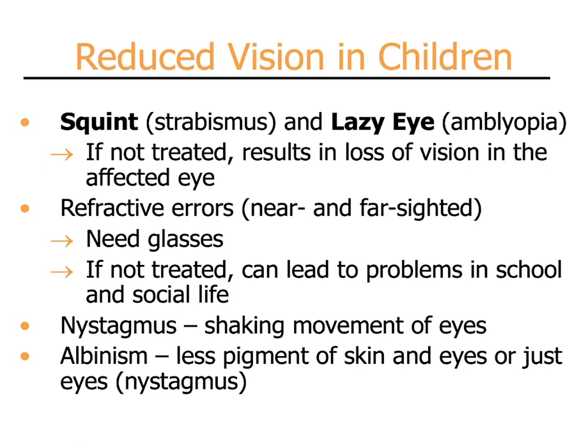Reduced vision in children is frequently from strabismus, also known as squint, and amblyopia or lazy eye. If not treated, these conditions result in a decrease in vision in one or both eyes. A very common cause of decreased vision is refractive errors — the need for glasses. If children do not receive glasses to correct their refractive error, this can lead to problems in school and their social life, as well as leading to the conditions of squint and lazy eye.